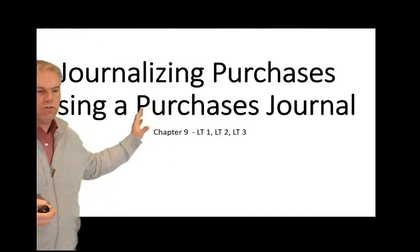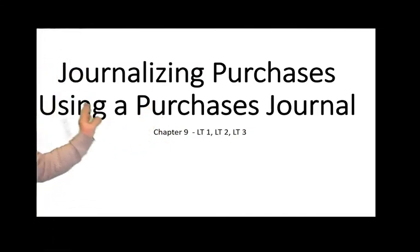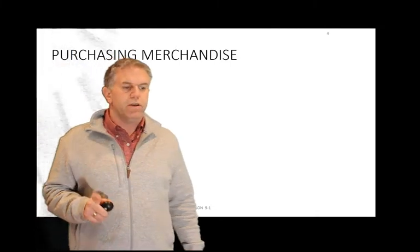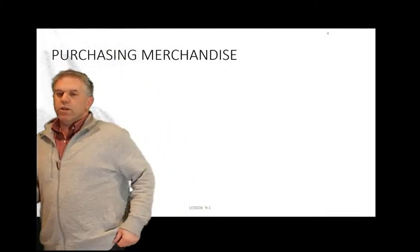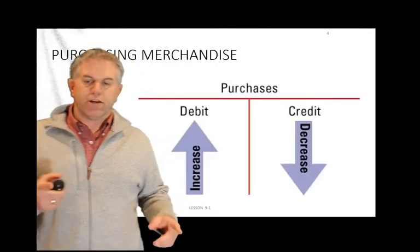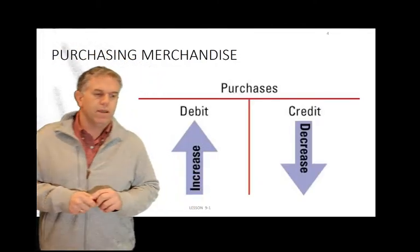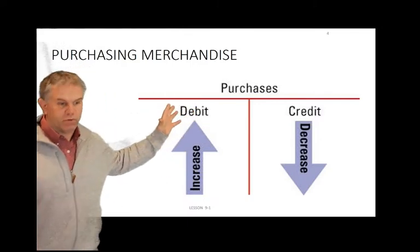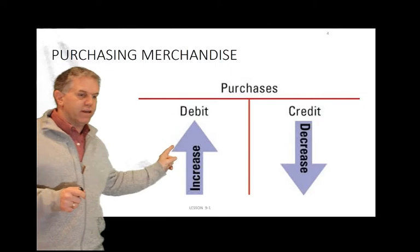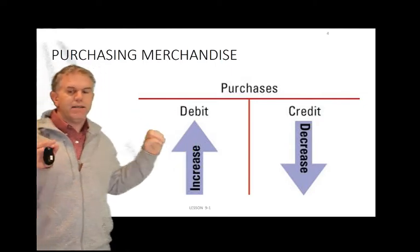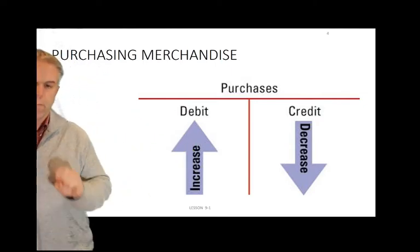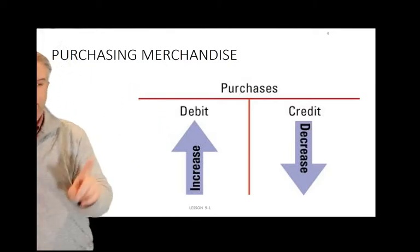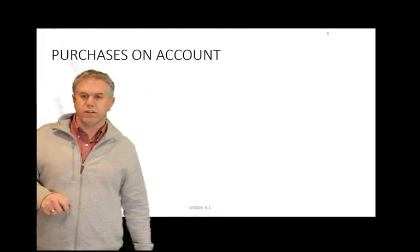We're going to talk about how to journalize purchases using a purchases journal. First, we need to talk about what purchase merchandising is. When you purchase merchandise, you use an account called Purchases. Purchases is technically an expense account — a cost account. A debit will increase it. Anytime it says we purchased merchandise, we are going to be debiting Purchases. We'll talk about the crediting side later in the trimester.